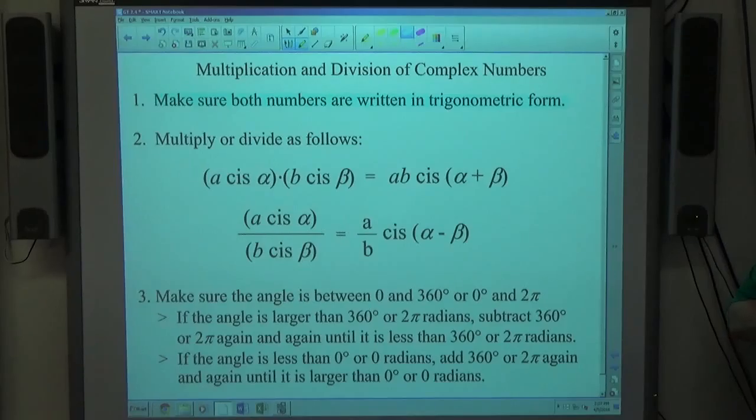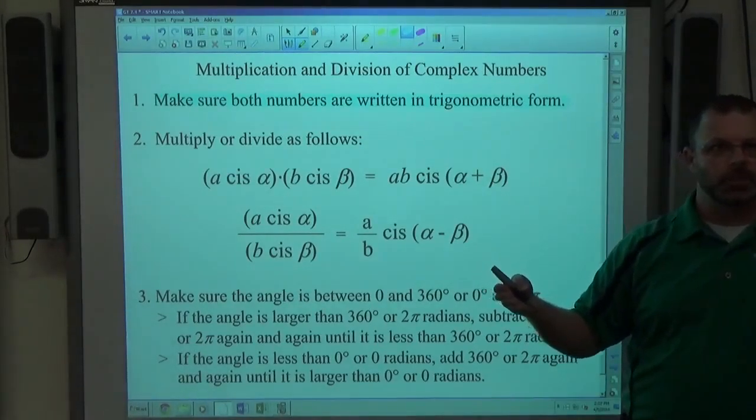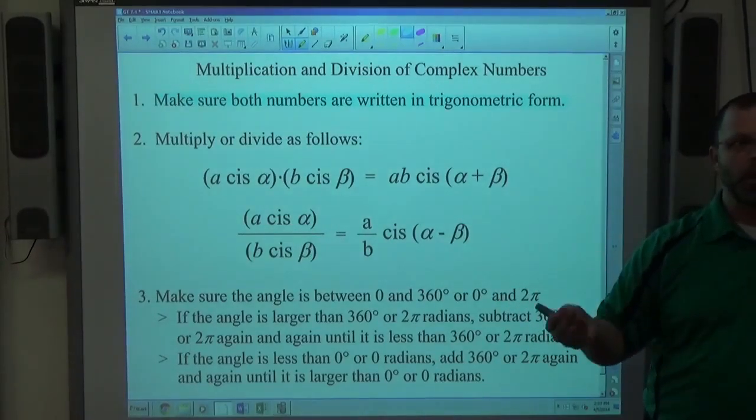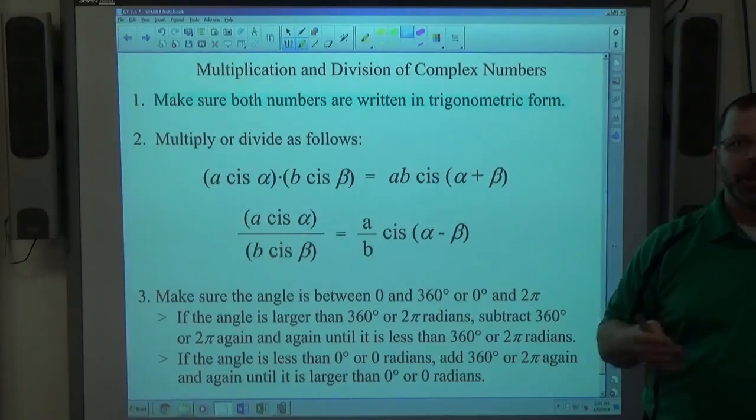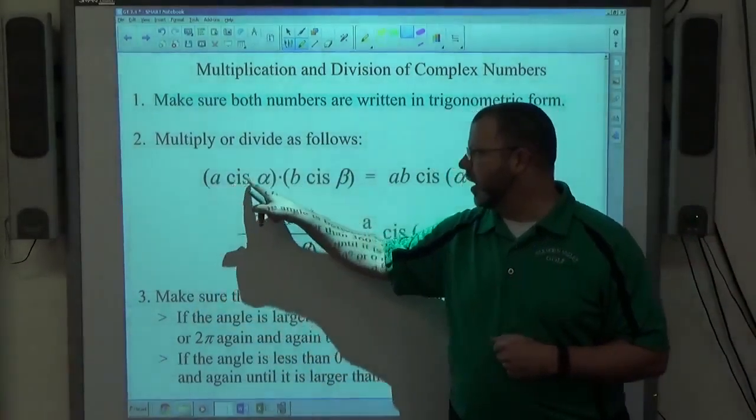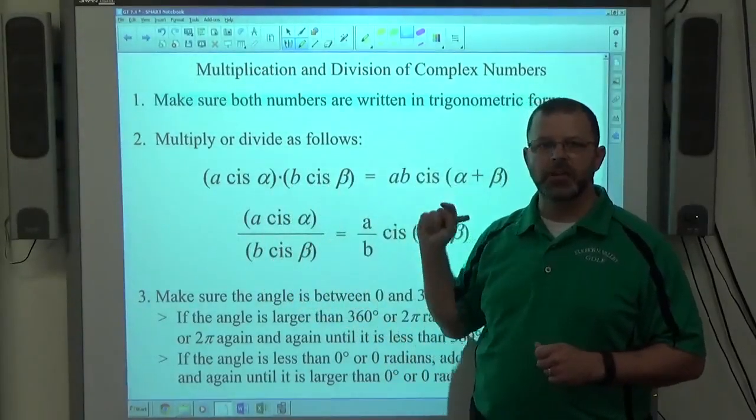To make the trigonometric form, we do just like we did yesterday. You find the magnitude of the complex number, how long it is. You find the reference angle alpha, you figure out what quadrant it's in, you find theta, and then once you've got all that stuff, you've got your something CIS some angle times something CIS some angle.